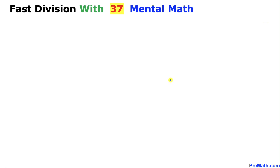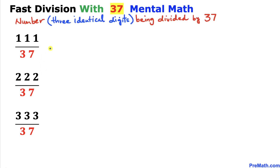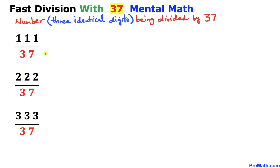Welcome to pre-math. In this video tutorial, I will be sharing with you some interesting facts about 37. Here are some examples you can see — all these three-digit identical numbers are being divided by 37. Let me show you how you can do these calculations in your head. The easiest way is to simply add the digits.